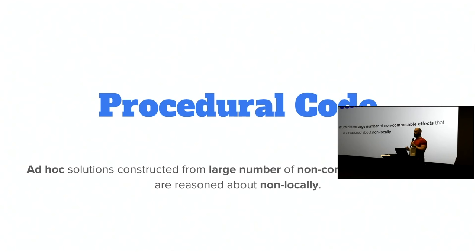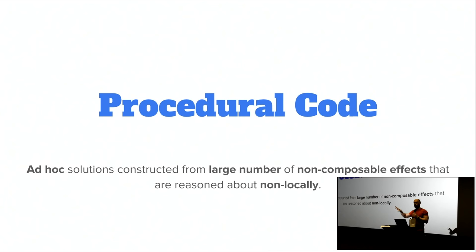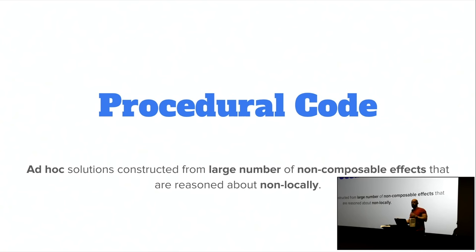You need to look at the entire program to understand what's happening in a tiny little section. That makes it really hard to change code safely. You go into a code base and you don't know what's going to happen, so you have to start studying. You see this method calls that method, which does network IO — and before long, you have to explore a huge amount of the code base to create a mental model of the impact your change will have.